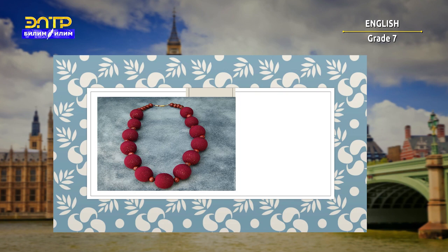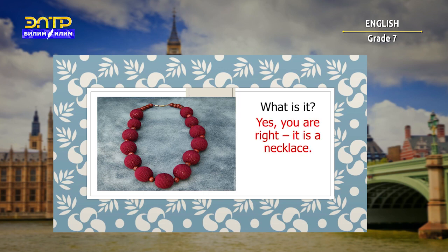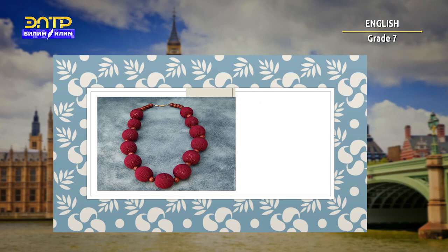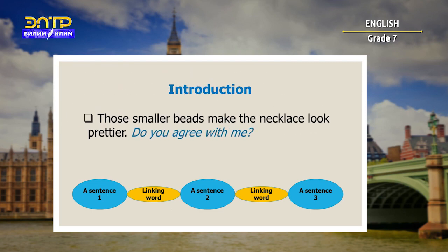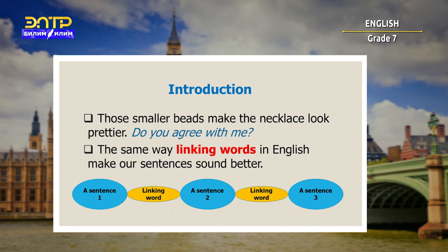Let me show you a picture. What is it? Yes, you are right — it is a necklace. My hobby is to make them. How is each bead linked? Yes, you are right. There is a smaller bead between bigger beads. Those smaller beads make the necklace look pretty. Do you agree with me? The same way, linking words in English make our sentences sound better, and you can see on the picture how a few sentences are linked with linking words.